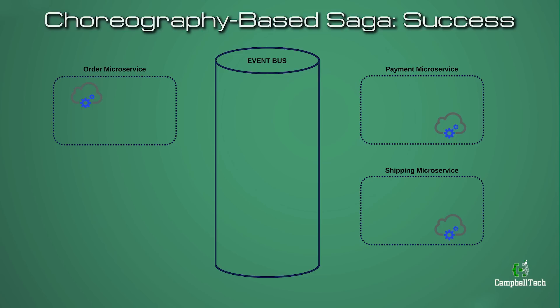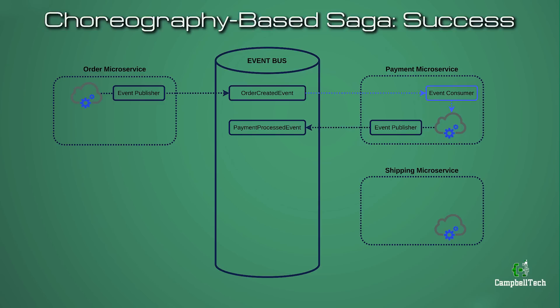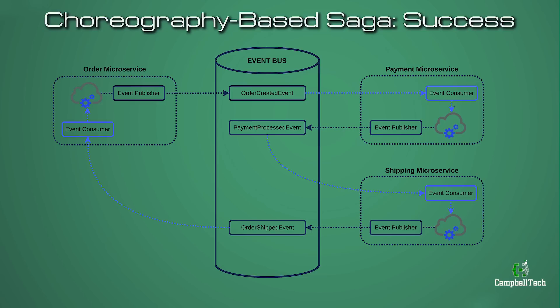First, an order microservice creates an order in a pending state and publishes an order-created event to the event bus. The payment microservice then listens for the order-created event and attempts to process the payment for the order. If it succeeds, it publishes a payment-processed event. The shipping microservice would then listen for the payment-processed event and attempt to ship the order. If it is successful, it will publish an order-shipped event to the event bus. The order microservice that started the whole process would then listen for the order-shipped event and, when it receives it, change the state of the order to approved, effectively committing the transaction.